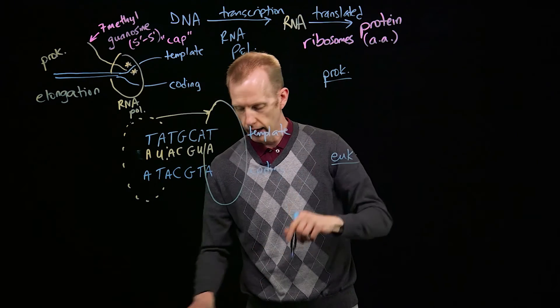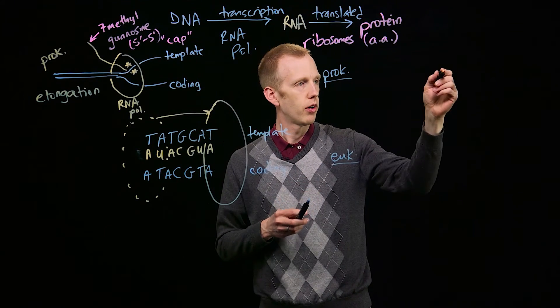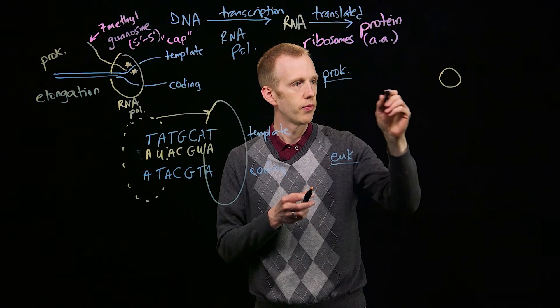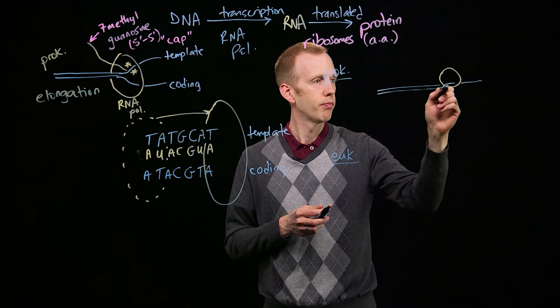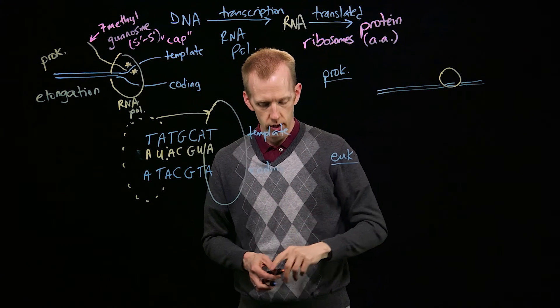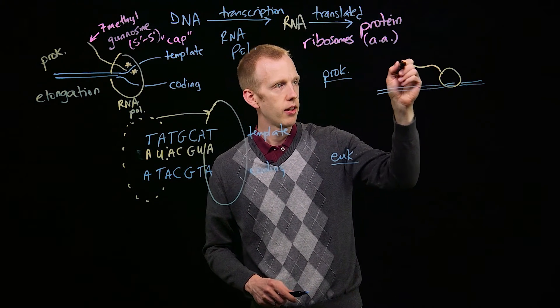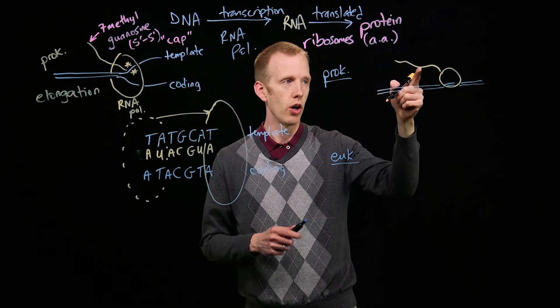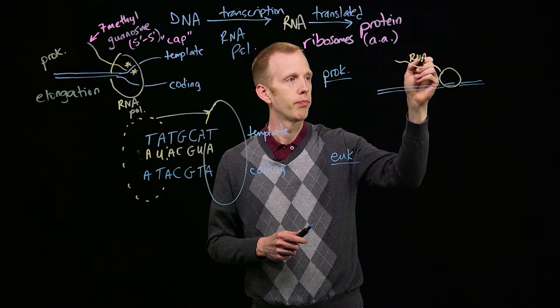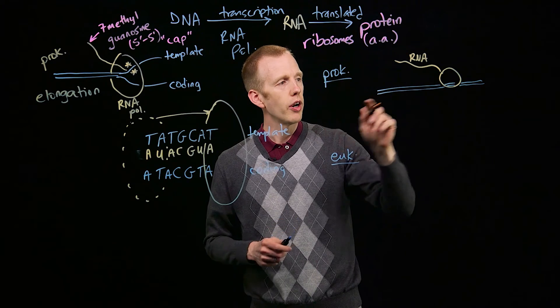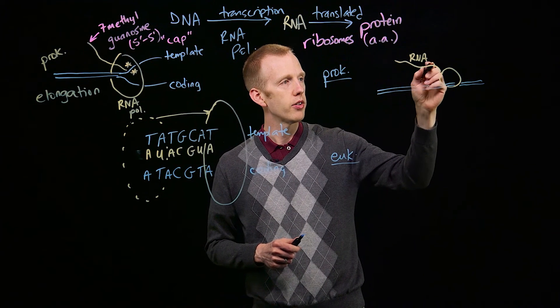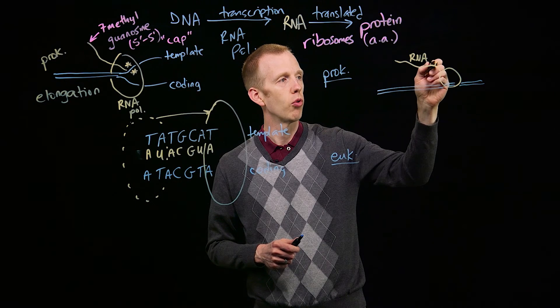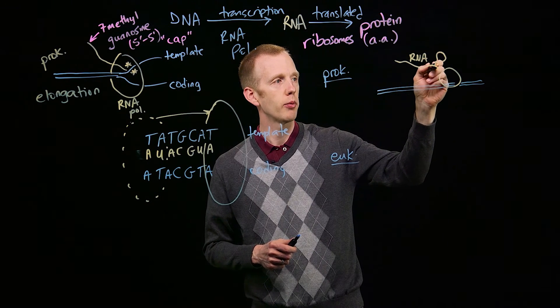In a prokaryote, as that RNA polymerase molecule is moving down a double-stranded piece of DNA and generating that primary transcript, the RNA molecule, there's a section of the gene, the DNA, that will encode a section of the RNA that will form a hairpin, which we've already talked about in class before.